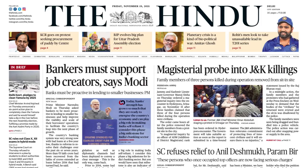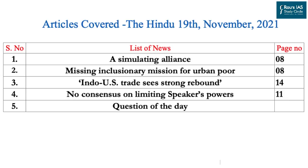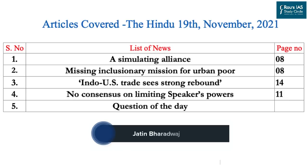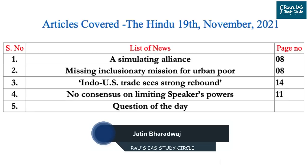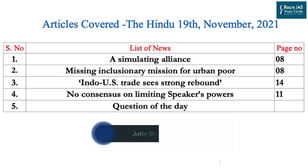Hello everyone and welcome to Daily News Simplified, your one-stop solution to detailed analysis of current affairs published in the Delhi edition of The Hindu Newspaper. Articles dated 19th of November 2021 are listed on your screen and the timestamping for these articles is already given in the description box. So let us begin with the first article for the day.